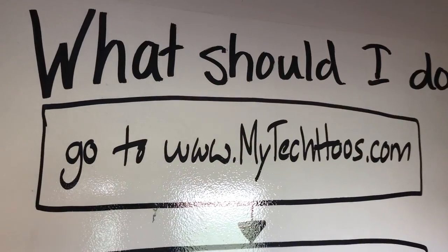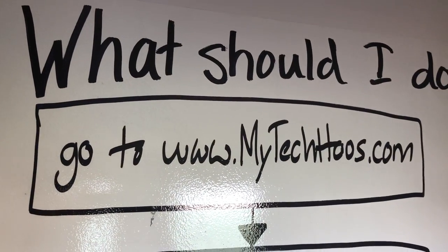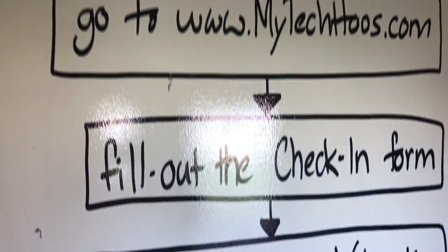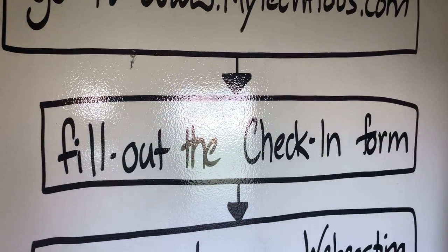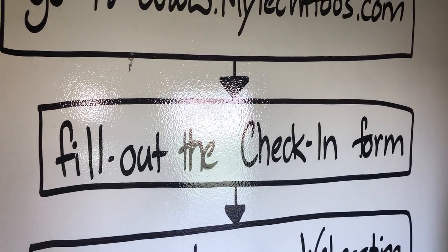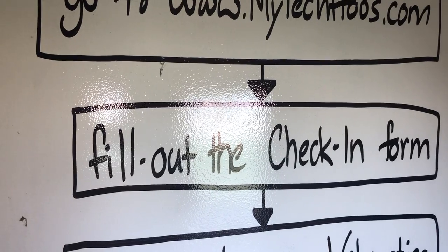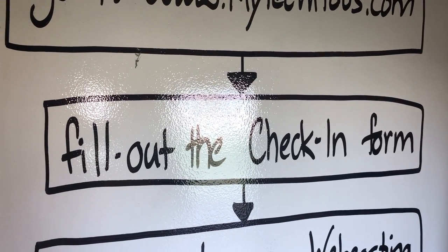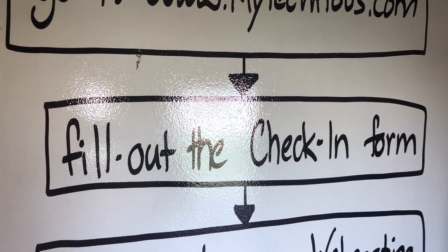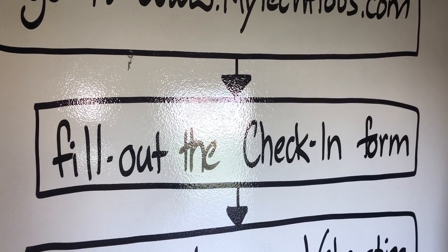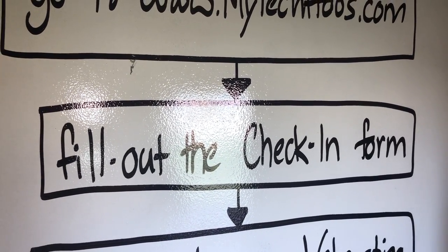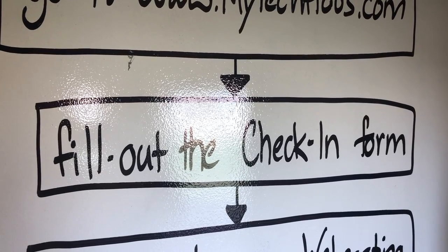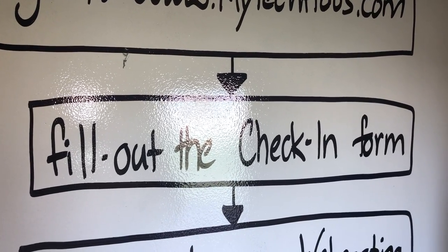Number one thing you do is you go to mytechtoos.com, you go there and you fill out the check-in form. That's how I take attendance, that's how I know what you're doing. Please make sure when you fill out the form that you give me a full and complete sentence of what you hope to work on today.